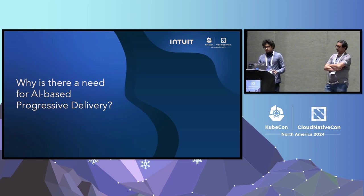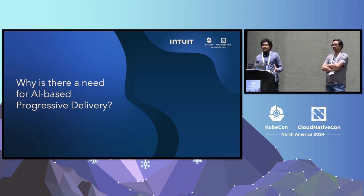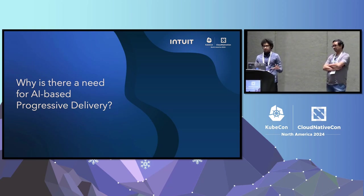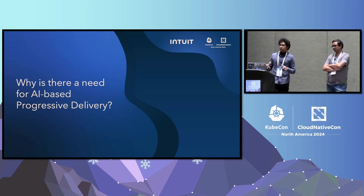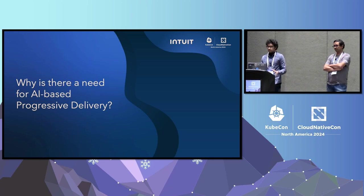Now let's talk about why we need to incorporate AI and ML into this whole system. First, we need to see what is the exact problem we are trying to solve using a progressive delivery system.